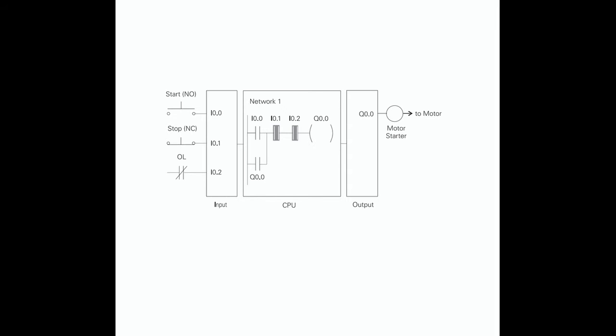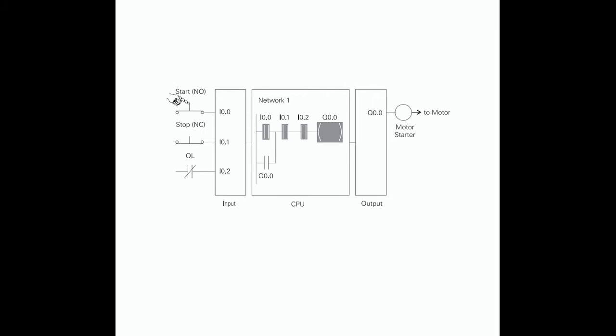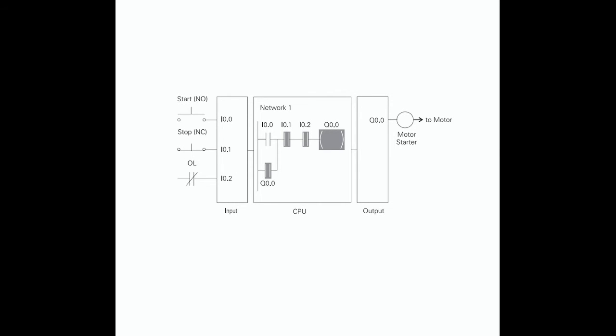In addition, a normally open set of contacts associated with Q0.0 is programmed on network 1 to form an OR circuit. A motor starter is connected to output Q0.0. When the start push button is depressed, the CPU receives a logic 1 from input I0.0, causing the I0.0 contact to close. All three inputs are now a logic 1, and the CPU sends a logic 1 to output Q0.0. The motor starter is energized and the motor starts. On the next scan, the normally open contact Q0.0 closes and output Q0.0 will stay on even if the start push button has been released.